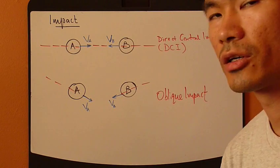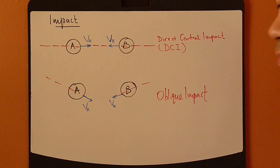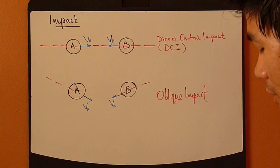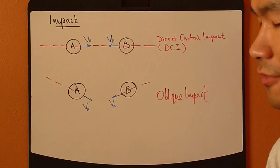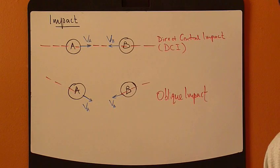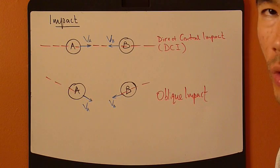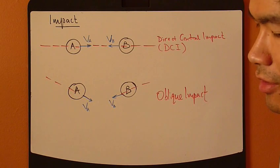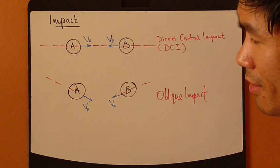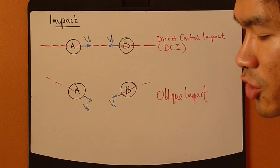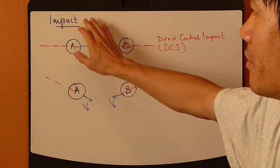Let's look at a subcategory of impulse momentum called impact. This kind of analysis is useful when you involve two or more particles and when they collide. The impact time is very, very short. For example, in the game of pool, there's a cue ball hitting a number ball. This collision takes place at a very, very short amount of time. This is called impact.